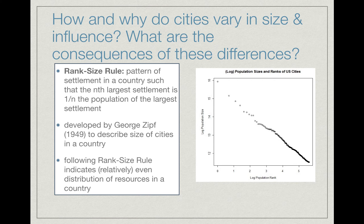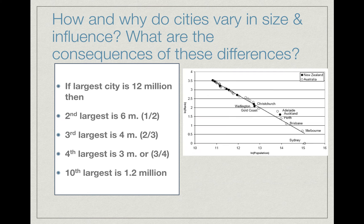Does a country or a place meet rank-size rule? It states that the pattern of settlement in a country is such that the nth largest settlement is one over n the population of the next largest settlement. Let's give an example, then we'll come right back here.